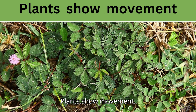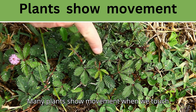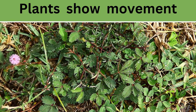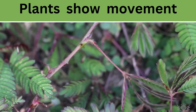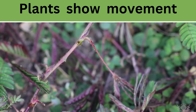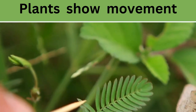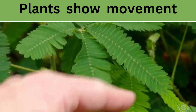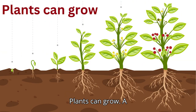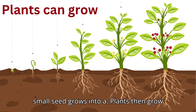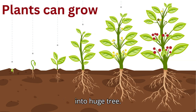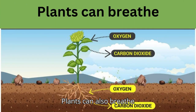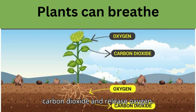Plants show movement — when we touch them. Plants can grow; a small seed grows into a plant, which then grows into a huge tree. Plants can also breathe; they take in carbon dioxide and release oxygen.